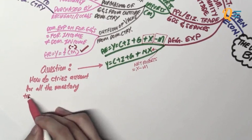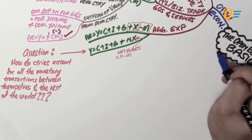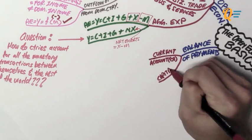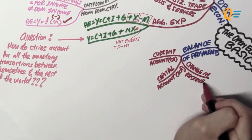How do countries account for all the monetary transactions between themselves and the rest of the world? The answer is that they do this using what we call a balance of payments, which is made up of your current account, which we denote as CA; your capital account, which we denote as KA; and lastly, your change in reserves, which we denote as the change in R.